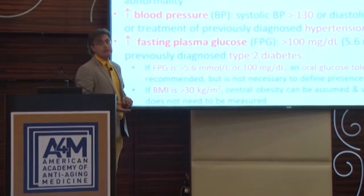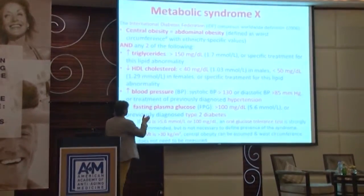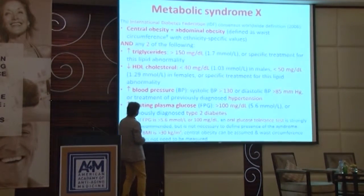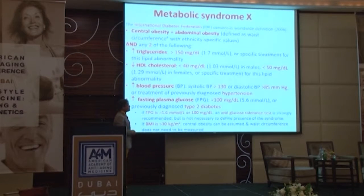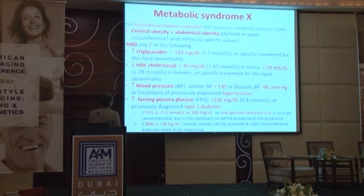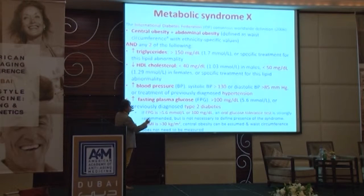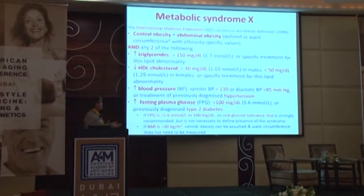Metabolic syndrome also includes lower HDL cholesterol — below 40 mg/dL in men and below 50 mg/dL in women. Blood pressure criteria are systolic above 130 mmHg and diastolic above 85 mmHg — already an intermediate degree of hypertension. Previously diagnosed and treated hypertension also counts. Additionally, fasting plasma glucose above 100 mg/dL, or previously diagnosed and treated type 2 diabetes, are part of the syndrome.